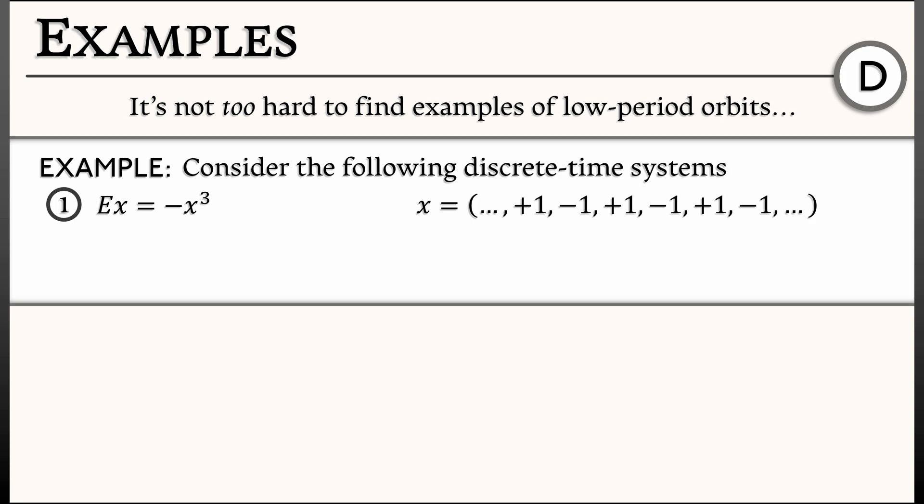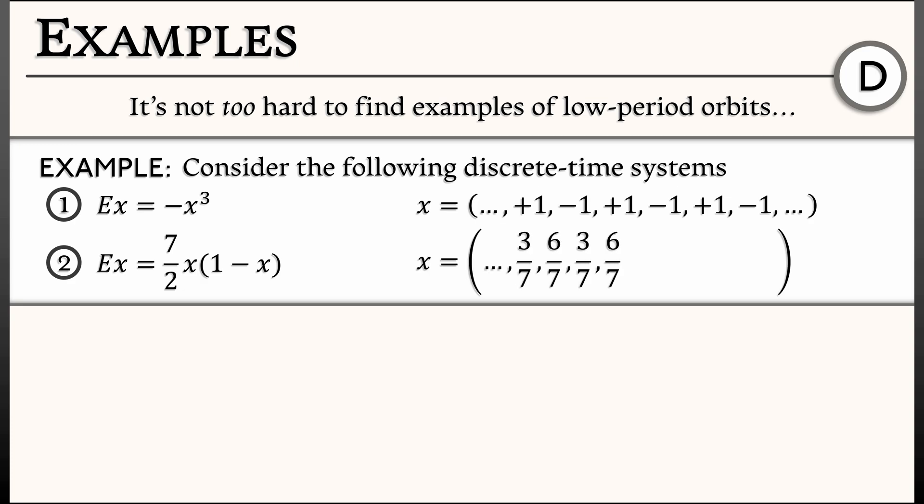A slightly more complex example arises if we look at a logistic equation of the form x' = (7/2)·x·(1 - x). There is again a periodic orbit of period 2. It will take a little more work to verify that the orbit alternating between 3/7 and 6/7 is periodic. That is, I plug in 3/7, I get 6/7; I plug in 6/7, I get 3/7. These are both period-2 orbits. What about a different period — something of period 3?